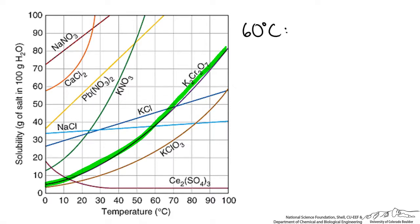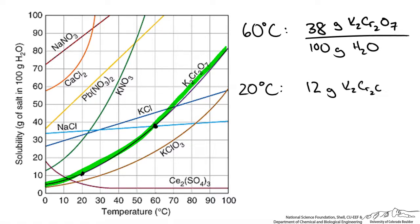So at 60 degrees Celsius, we are looking right about there, which gives us, off of my graph, 38 grams of potassium dichromate per 100 grams of water. And I tend to write it this way so I know it is not 38 weight percent. At 20 degrees Celsius, we are looking around there on the plot, and I read this as about 12 grams of potassium dichromate per 100 grams of water.